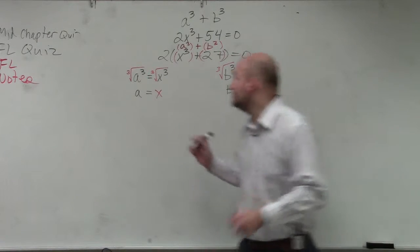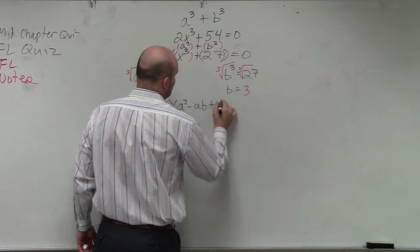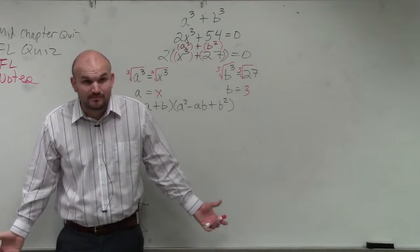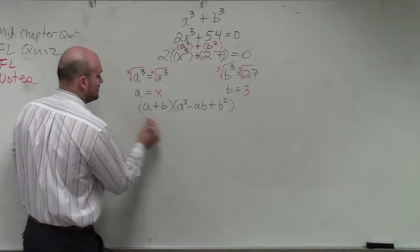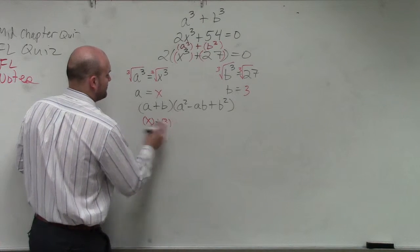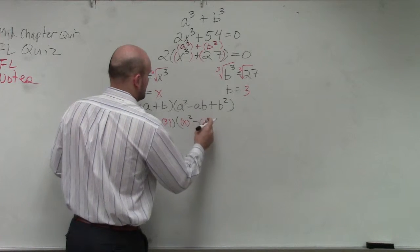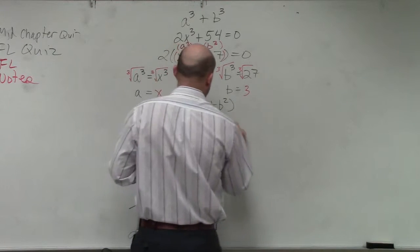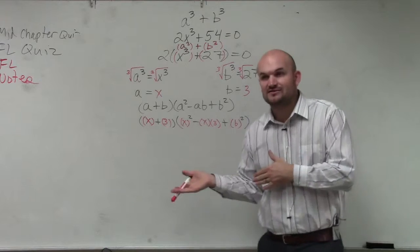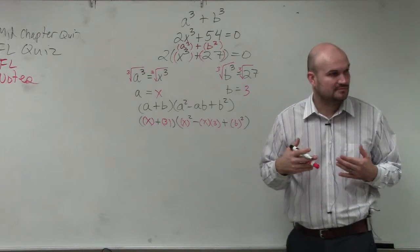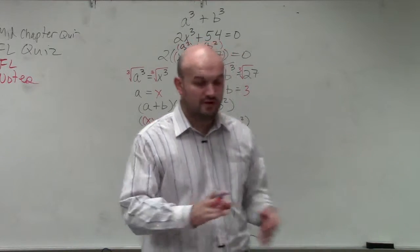So the factored form which was provided to you for the sum of two cubes is a plus b times a² minus a times b plus b². That was the factored form. That's all I asked you guys to do, was just to figure out what a and b were and then plug them into the factored form. So therefore, we have x plus 3, I'm putting them all in parentheses, times x² minus x times 3 plus b². Does everybody see how I evaluated a for x and evaluated b for 3?